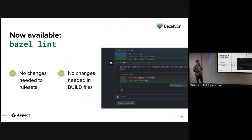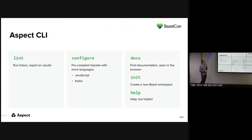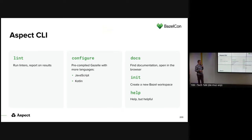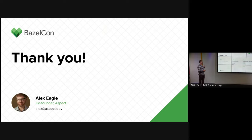It doesn't require changes to rule sets or build files to lint them. We have our own CLI, so we can actually add the lint command to Bazel through either a plugin or we're building it in. Our CLI also has a pre-compiled version of Gazelle, so you don't have to build Gazelle yourself in your repo. We're adding more languages there. We have a docs command to pop things open in your browser, an init command to make a new workspace, and we have help — Bazel also has help, but ours is helpful. I don't mean to dig on the Bazel team; I appreciate all of their effort very much. I appreciate all of you for coming to BazelCon and listening. Thank you very much.